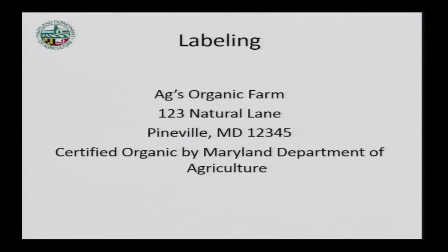Labeling: not many farms are labeling their product, but if you are — say you had a bag of lettuce and wanted to put 'organic lettuce' on it — you would put your farm name and address, then 'certified organic by the Maryland Department of Agriculture.' When making an organic claim, you need your name and address on the label, and below that it needs to say certified by whoever you're certified by.